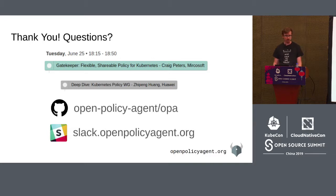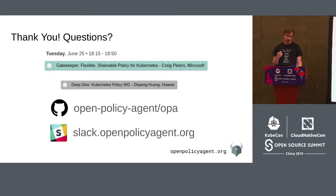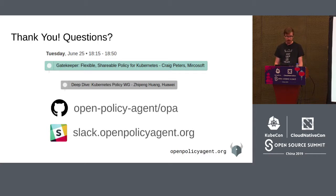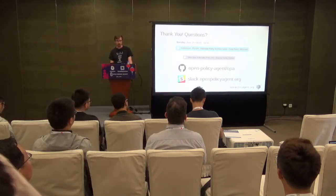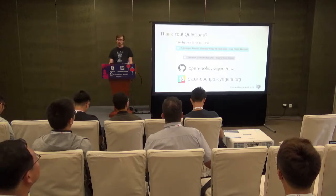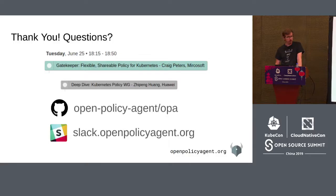That's it — we've got about four minutes for questions. There are two related talks later today: the Gatekeeper talk by Craig Peters at Microsoft at 6:15, which covers using OPA for Kubernetes admission control, and the Kubernetes Policy Working Group deep dive from Howard at Huawei at the same time. For the code, check out openpolicyagent.org and OPA on GitHub. Feel free to join the Slack organization and post questions there. I'm happy to do some Q&A now.